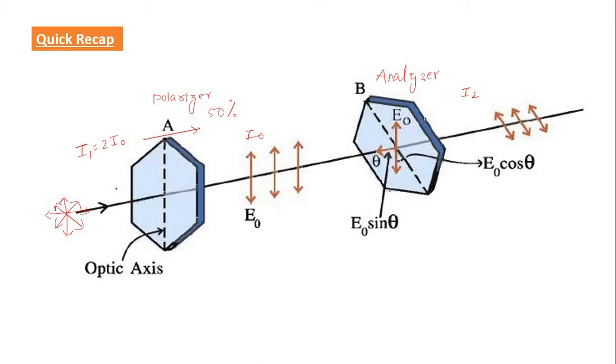Now, this I2 is equal to I1 cos square theta, where theta is the angle between optic axis of A and B, or it is the angle between B and optic axis B and E0.